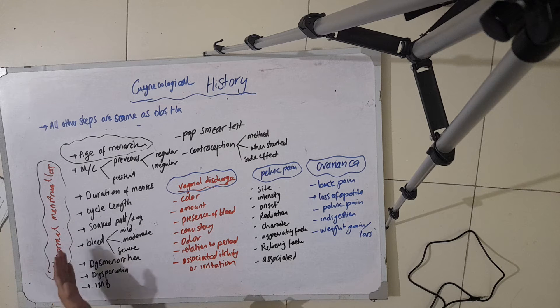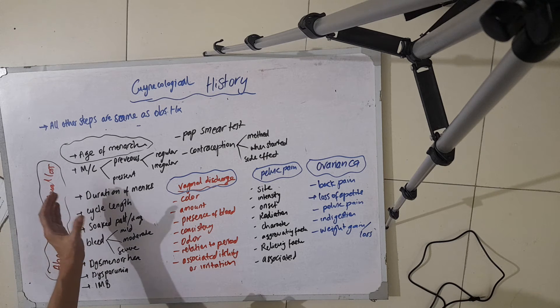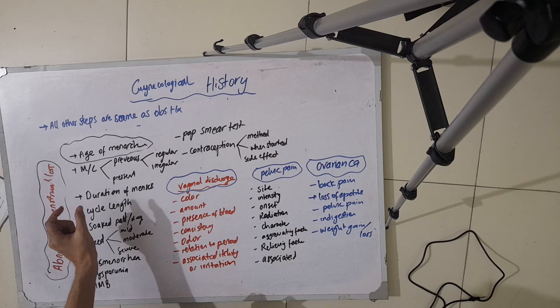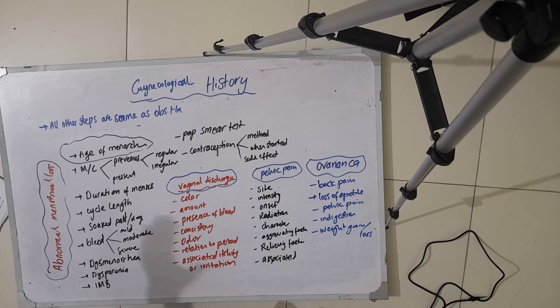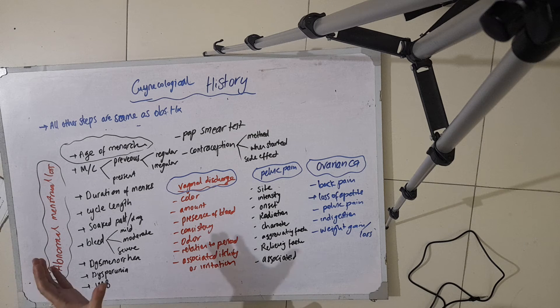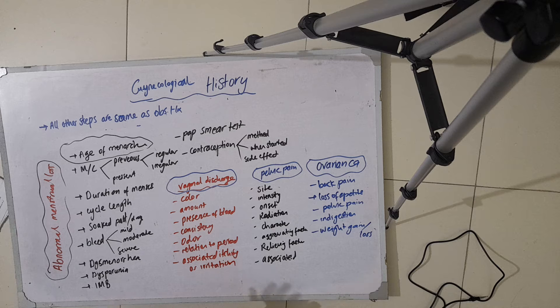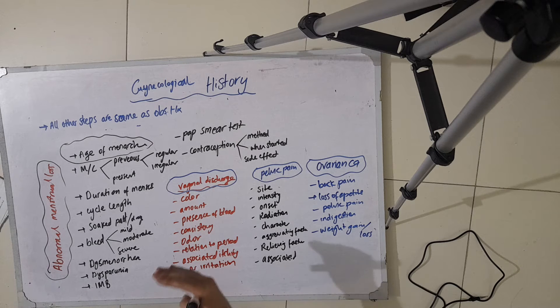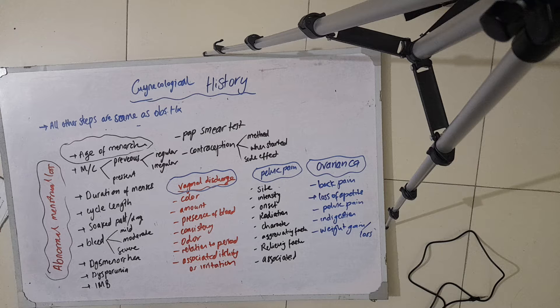For a patient with a complaint of abnormal menstrual loss, first of all you ask about her menstrual cycle, both previous and present. Was the previous period regular or irregular? You also ask about the duration of menses, for how many days they are bleeding, and the cycle length.